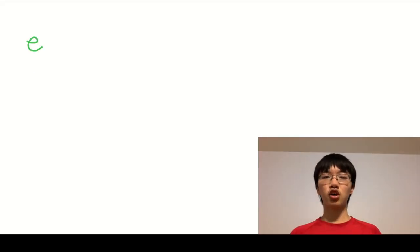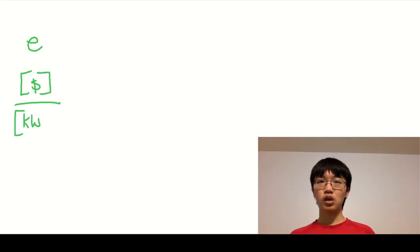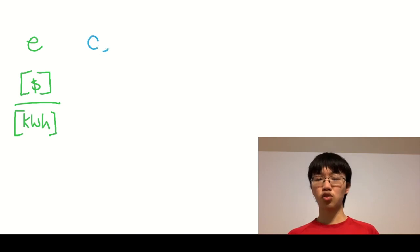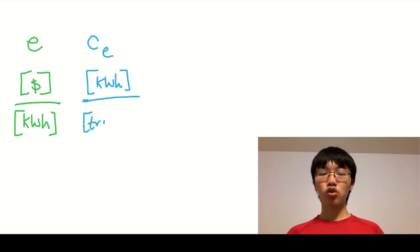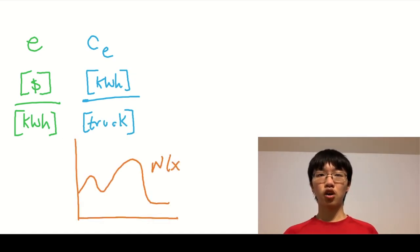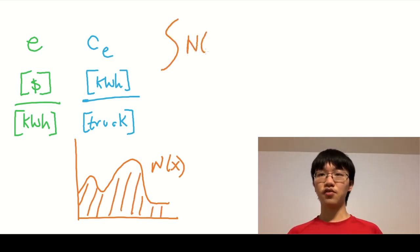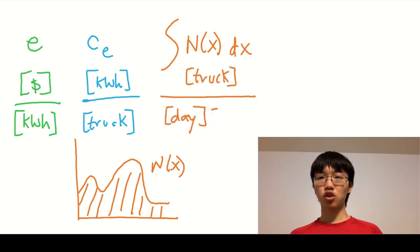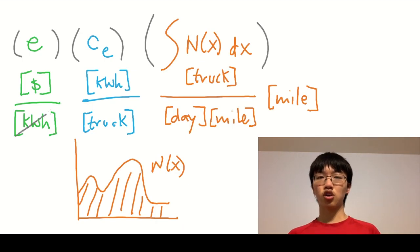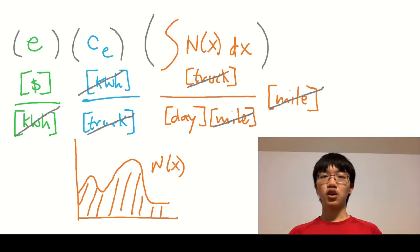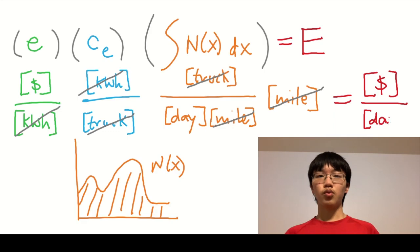Let's calculate the refueling costs for electric trucks along the corridor. We first take the cost per kilowatt hour of electricity, e. We multiply this by the average electric capacity of a truck, c sub e. This gives us the total cost of refueling one truck. Now, we just need to figure out the number of trucks along the corridor which need refueling. This is precisely what the need function n(x) is for. Since the need function gives the number of trucks per day that need to recharge at a certain point along the corridor, integrating along the entire corridor gives us the number of trucks that need to charge along the corridor. Multiplying all these factors together gives us the dollars spent per day on recharging along a corridor. We call this big E.